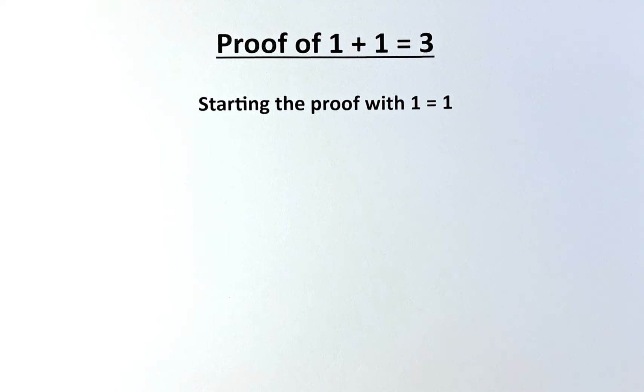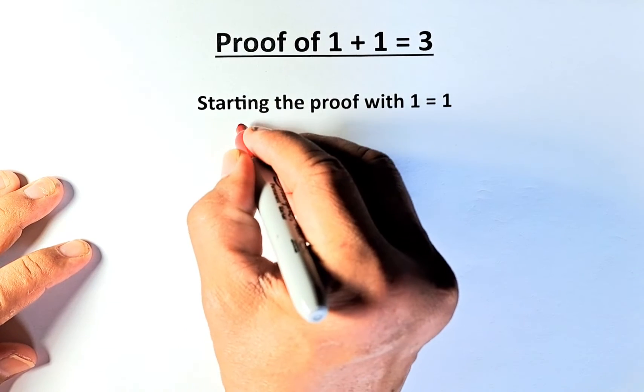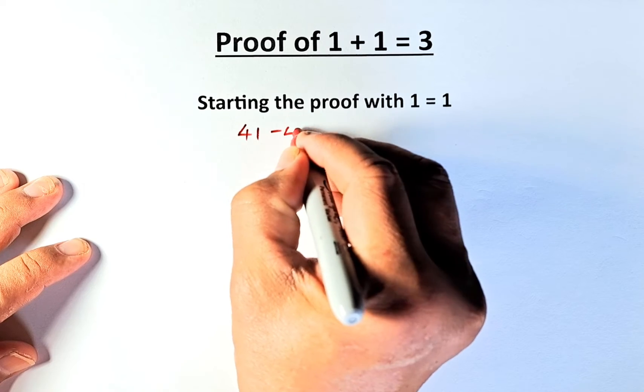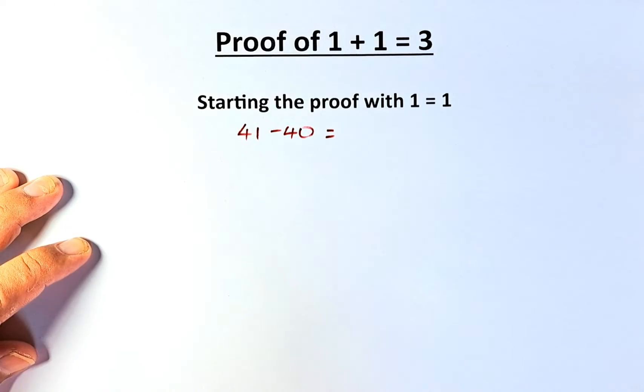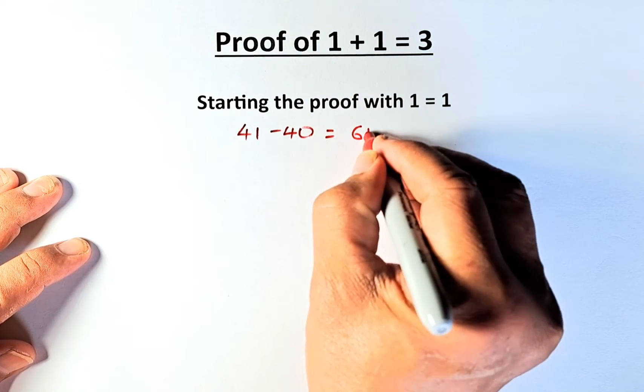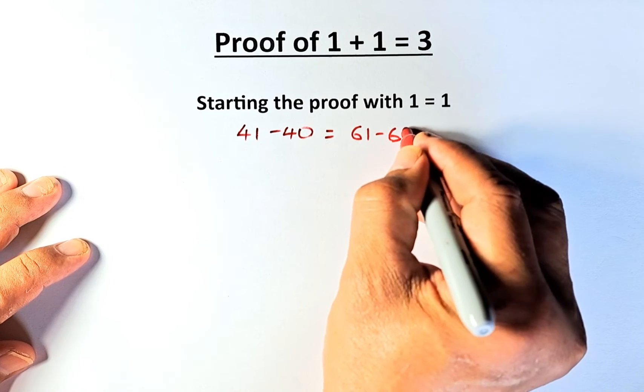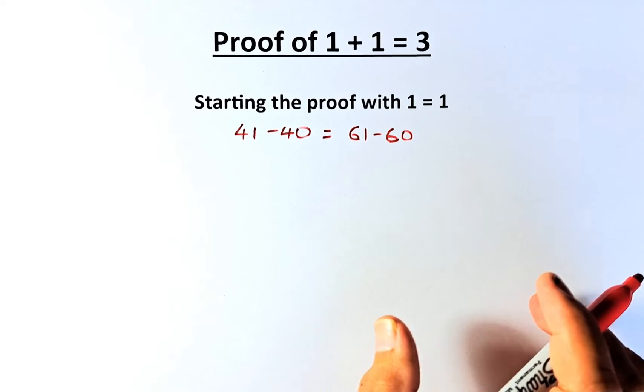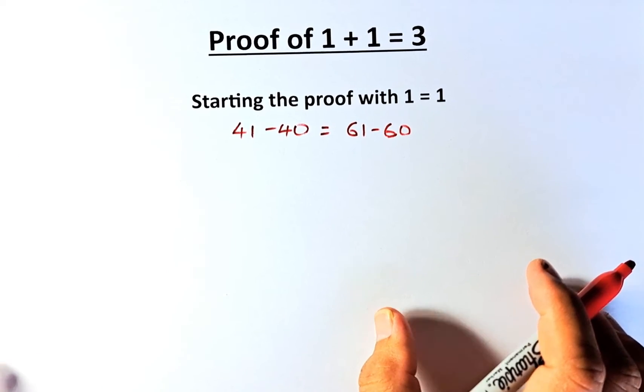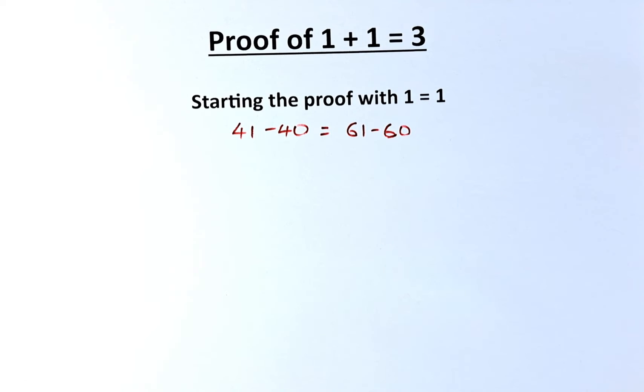We're going to change 1 equals 1 to another form. 41 minus 40 equals 61 minus 60. There's no argument. 41 minus 40 is the same as 1, and 61 minus 60 is the same as 1.